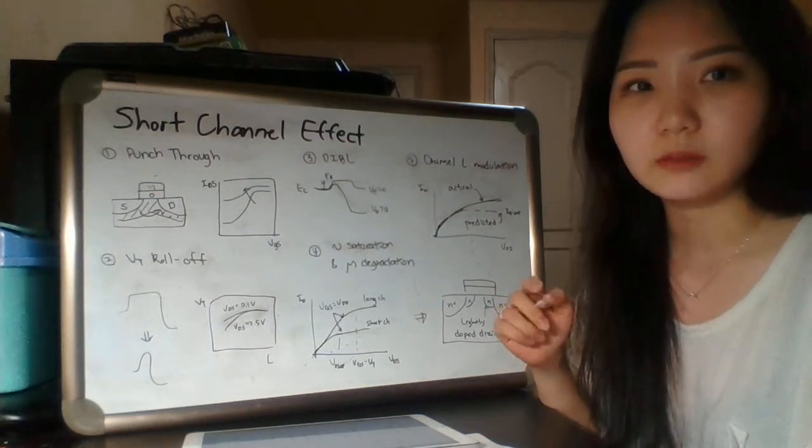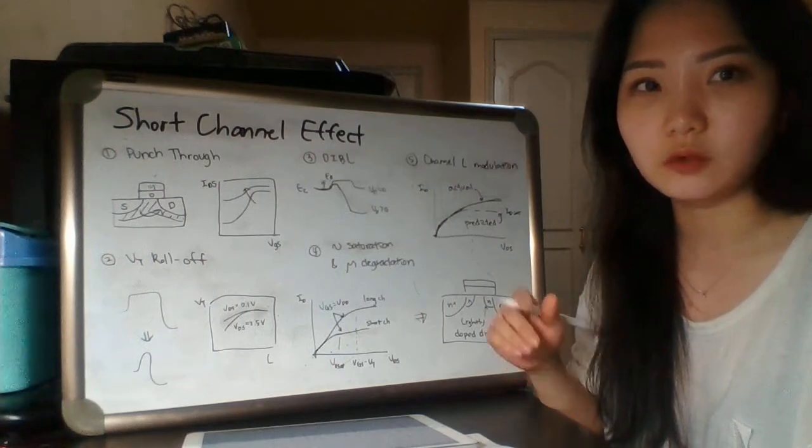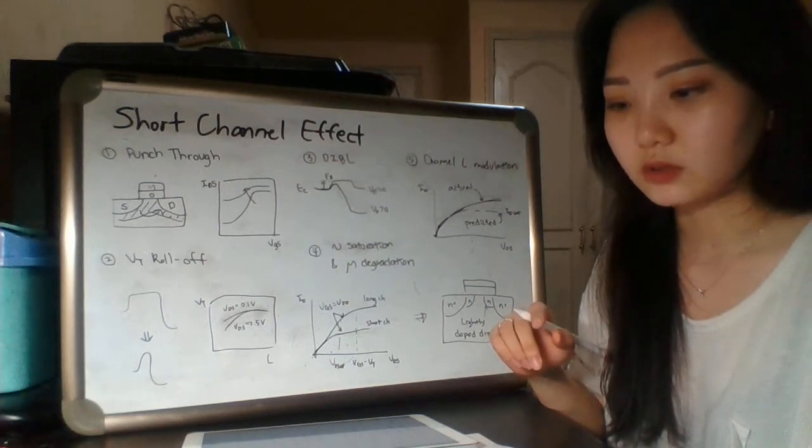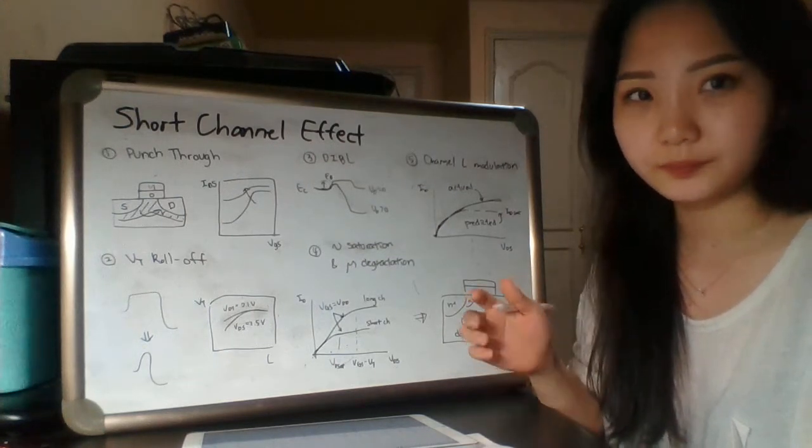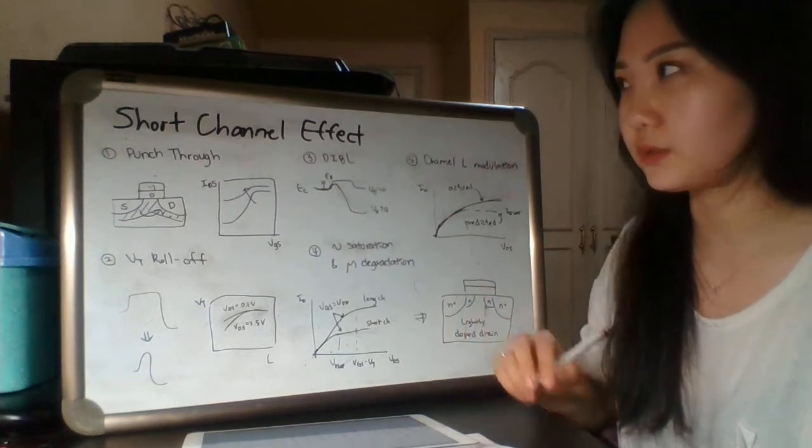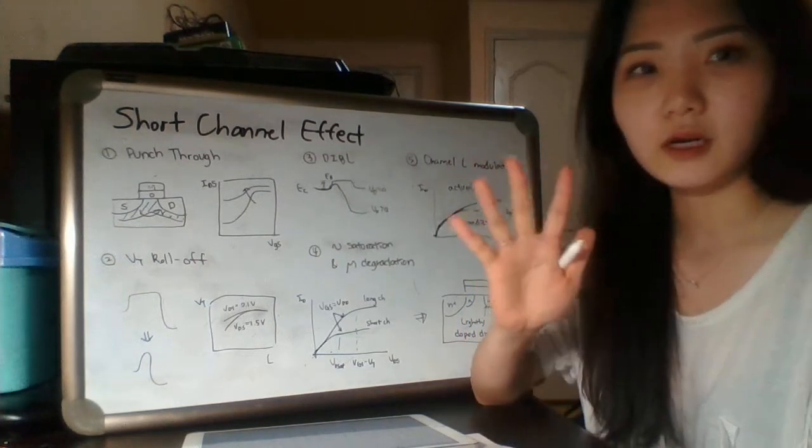Nowadays, we have to make MOSFET channels shorter, but there are some problems with short channels. I'll discuss five examples.